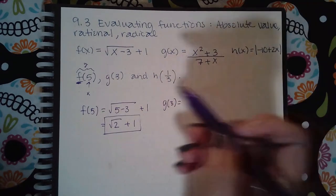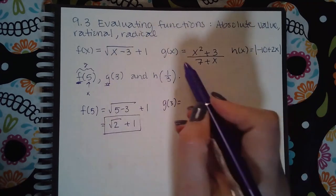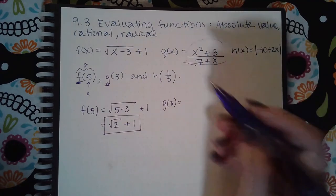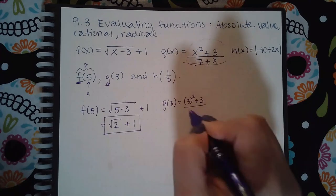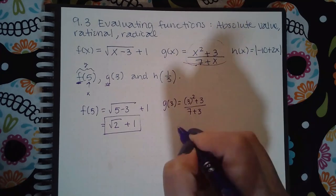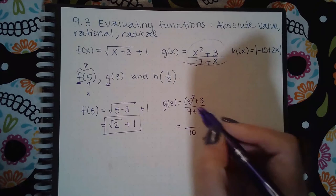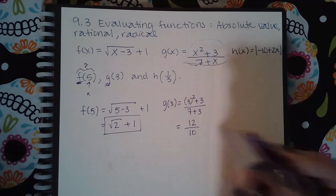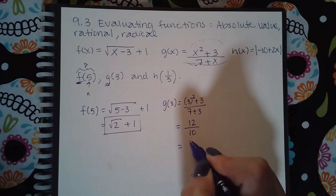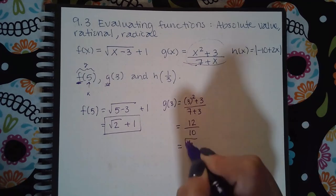For g of 3, we're going to use the g function and plug in 3 for x. So we get 3 squared plus 3 over 7 plus 3. In the denominator I get 10, here I get 9 plus 3 which is 12, and then I can reduce that to 6 over 5. That would be the response for g of 3.